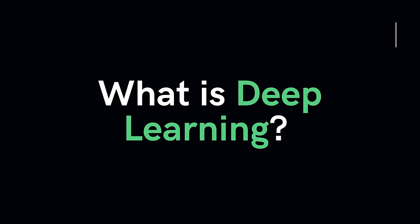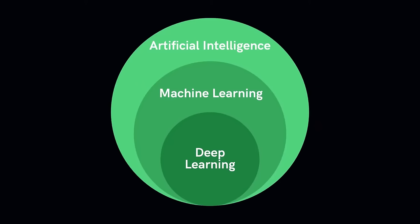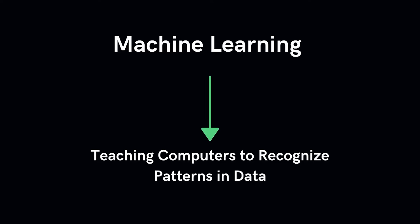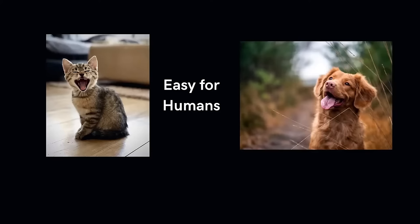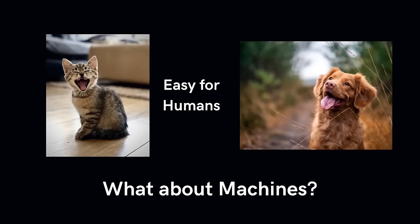This entire course is centered on the notion of deep learning, but what is it? Deep learning is a subset of machine learning, which in turn is a subset of artificial intelligence, and involves more traditional methods to learn representations directly from data. Machine learning involves teaching computers to recognize patterns in data in the same way our brains do. As humans, it's easy for us to distinguish between a cat and a dog, but it's much more difficult to teach a machine to do this.